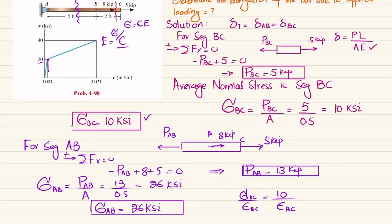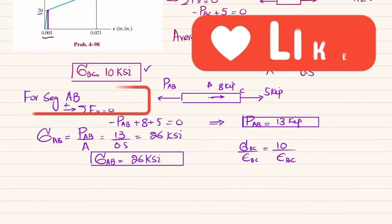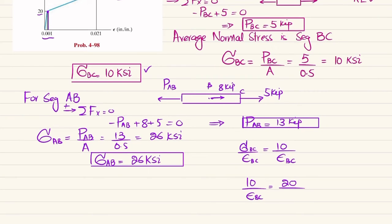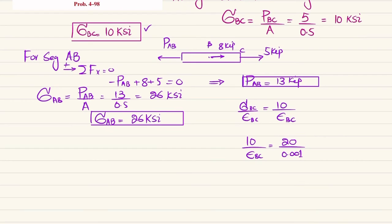From the stress-strain diagram, at 20 ksi the strain is 0.001. Since sigma_BC is 10 ksi, which lies on this first line segment, the ratio of stress to strain is constant along that line. So we write: 10 divided by epsilon_BC equals 20 divided by 0.001. This gives us the strain in BC.